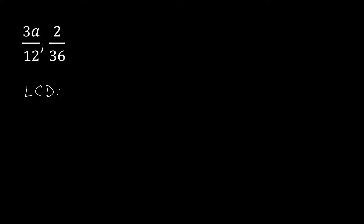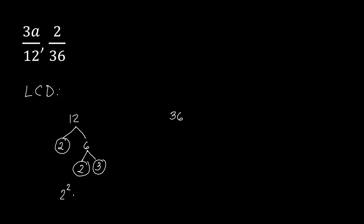That method is called prime factorization, using a factor tree. We list down the denominator 12 and break it down into prime numbers. We start with 2 times 6, which is 12. Then we break down 6 into 2 and 3, both prime. So the prime factorization of 12 is 2 squared times 3.